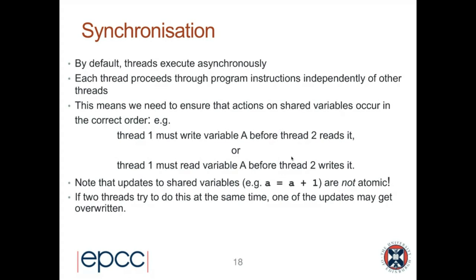In the previous example, we have to make sure that thread one has actually written variable A before thread two reads it. Sometimes because we tend to reuse memory locations, we may want the dependency the other way around — making sure that thread one reads the old value in A before thread two writes something new into it.